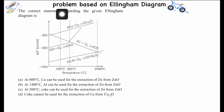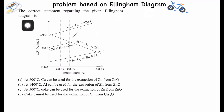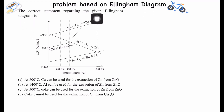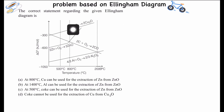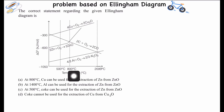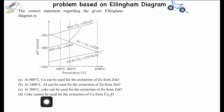Hello everyone, today I'm going to discuss a problem that is based on an Ellingham diagram. The question asks for the correct statement regarding the given Ellingham diagram, which is basically a ΔG⁰ versus temperature plot. These are the four options we have to select.